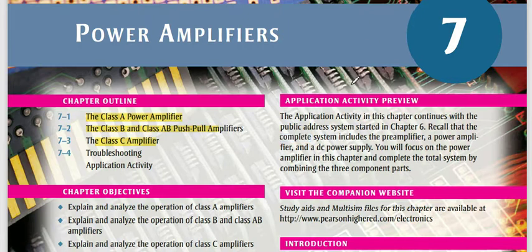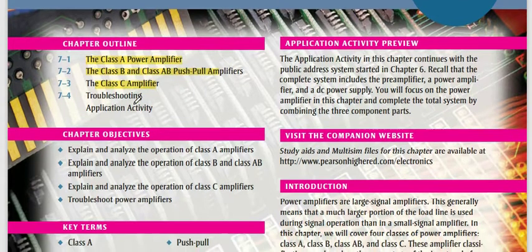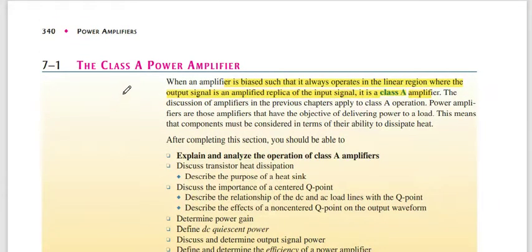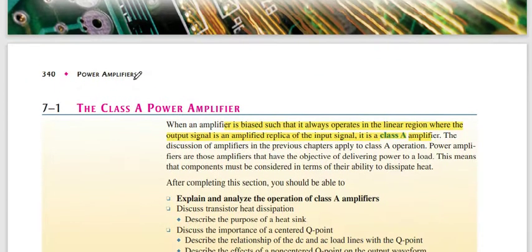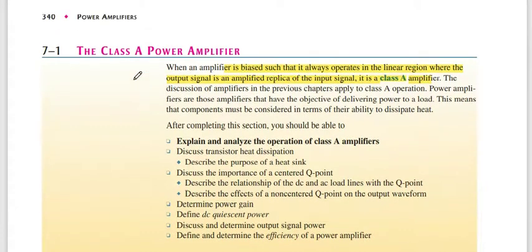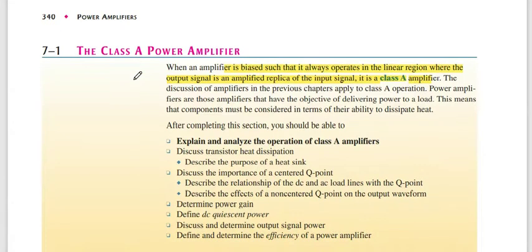Assalamu alaikum. Today we start Chapter 4, Power Amplifiers. There are four classifications: Class A, Class B, Class AB, and Class C. I give you the review of these four amplifiers. Basically, in this chapter we discuss the Q-point — as the Q-point is moved from the load line cutoff to saturated, or saturated to cutoff, we classify the amplifier accordingly.